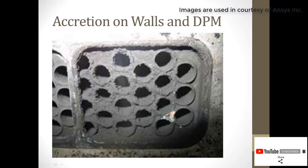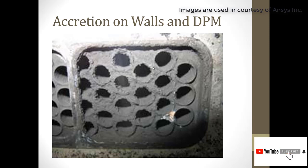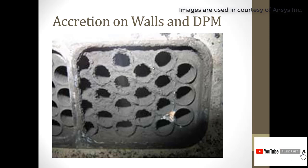Regarding accretion on the walls: when exhaust gas passes through the different parts of the heat exchanger, there is a high probability that soot particles and carbon particles present in the exhaust gas accumulate on the walls of the heat exchanger, reducing its effectiveness. To determine the proportion accumulating on the wall prior to manufacturing an engine with EGR, we can use ANSYS Fluent simulations. Using the discrete phase method, we can find the amount of soot particles that deposit on the heat exchanger walls over time.